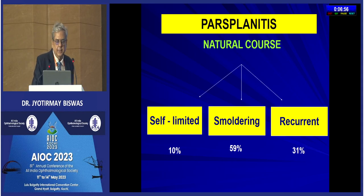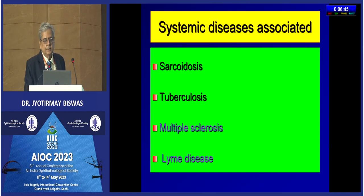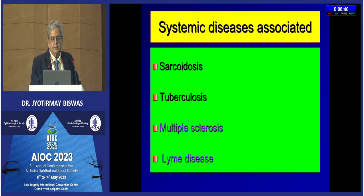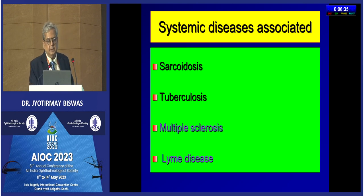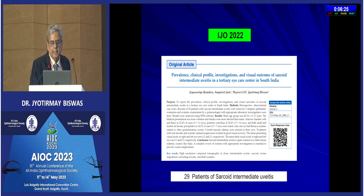The natural course is self-limited in only 10 percent of cases; usually it is smoldering or recurrent — about 80-90 percent, with 59 percent smoldering and 31 percent recurrent. The diseases I keep in the differential in our country are sarcoidosis and tuberculosis. Rarely it can be associated with multiple sclerosis. I have seen about five to six cases of Lyme disease. We published a paper in IJOS 2022 on 29 patients of sarcoid intermediate uveitis as one of the common causes in our country.